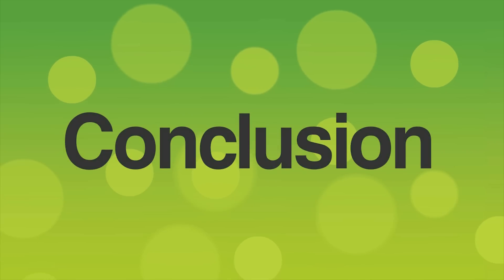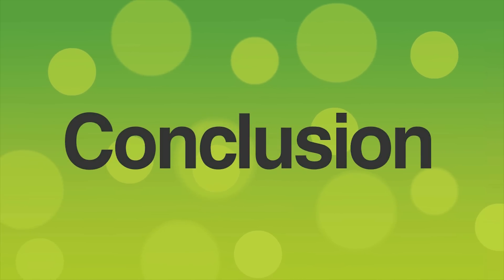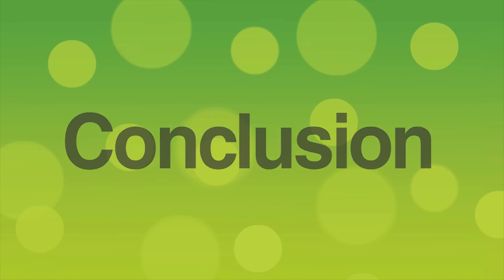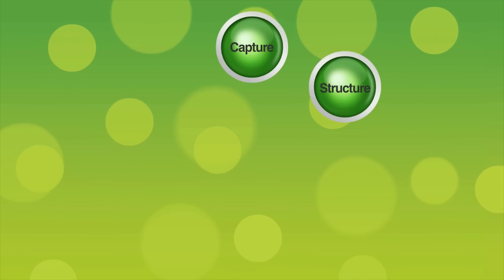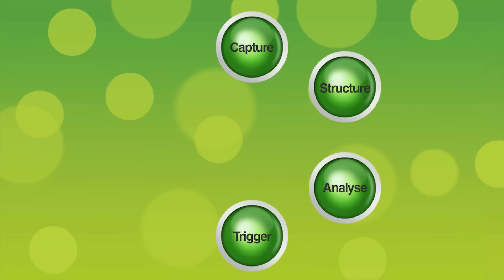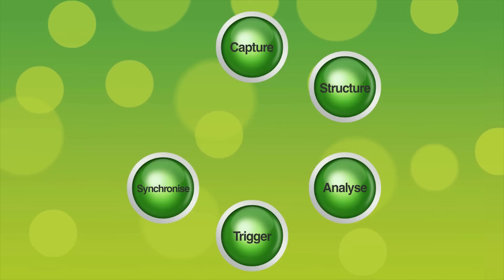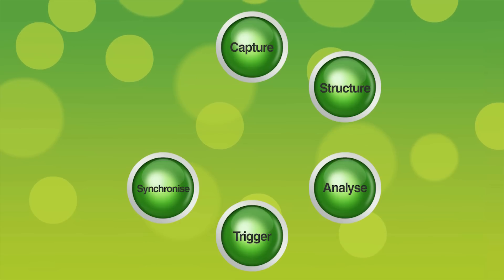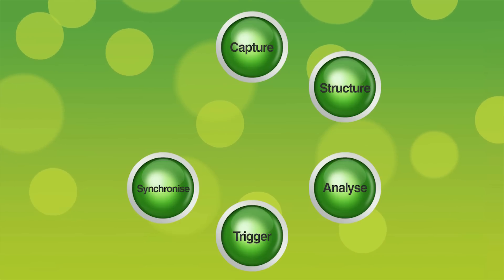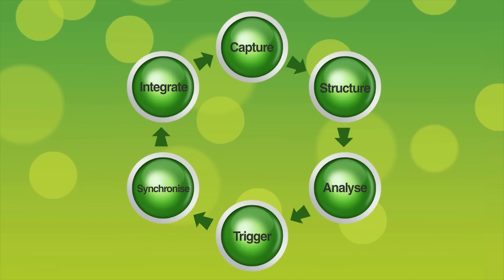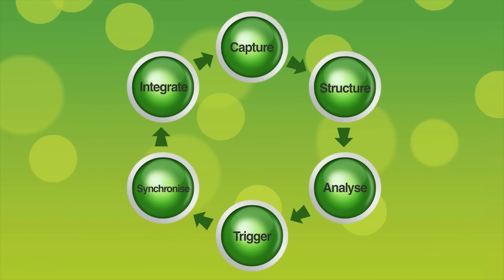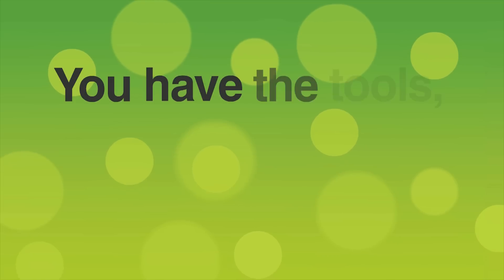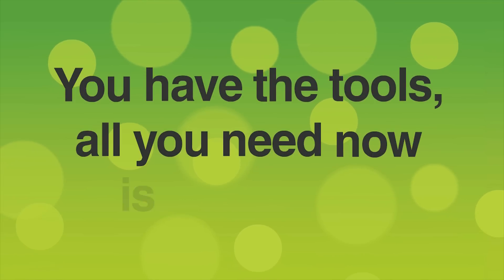This has been a simple example, but it shows that your OSI soft PI system has all the tools you need to collect or reference data, organize it into a logical model, use it to calculate asset condition, raise a trigger when attention is needed, and seamlessly synchronize your asset model between your OSI soft PI system and asset management system — and integrate those systems to automatically get attention where it's needed. You have the tools. All you need now is the vision.